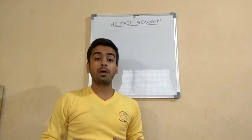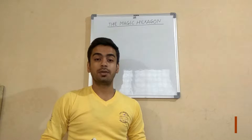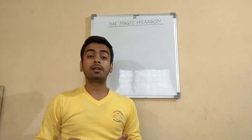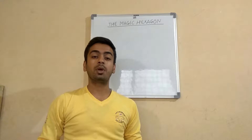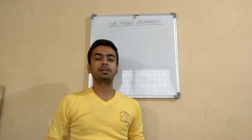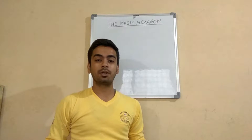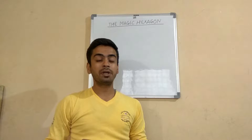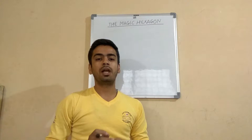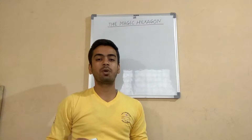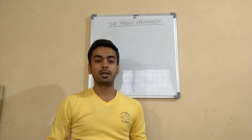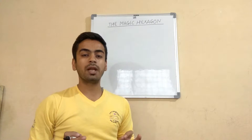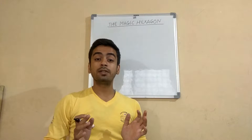In this video we are going to study the magic hexagon. The magic hexagon is a tool which helps us write trigonometric identities very easily. We can write many types of trigonometric identities with the help of this magic hexagon in just minutes. You just have to draw it on paper and write the identities, which will help you solve mathematics and physics problems very easily.